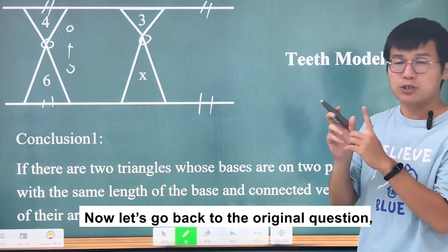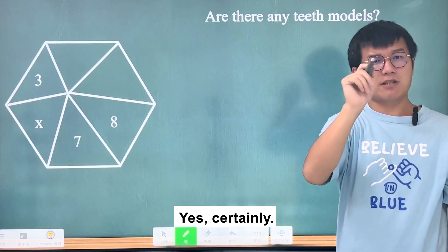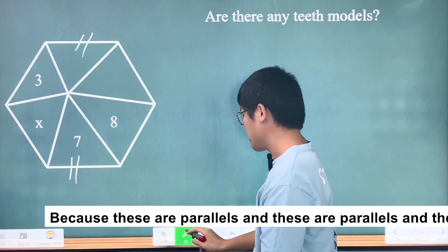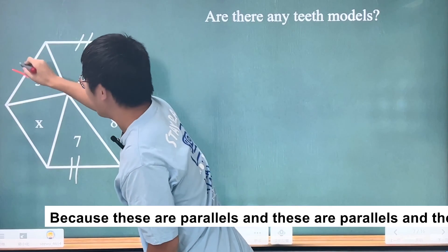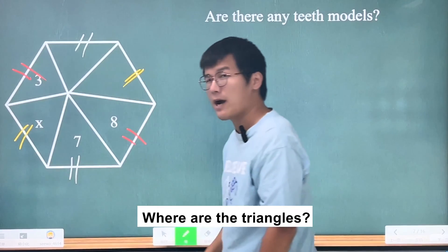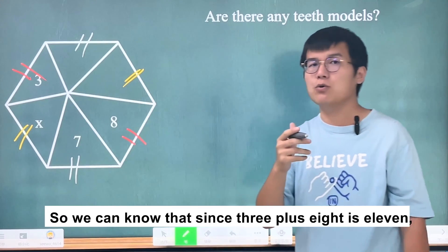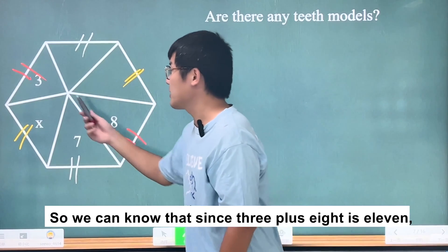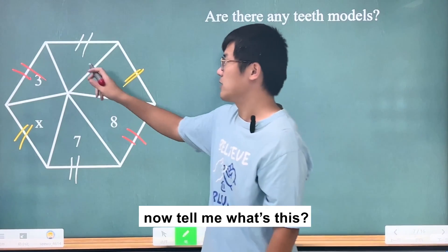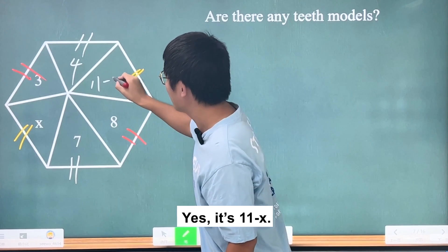Now let's go back to the original question. Are there any tease models? Yes, certainly! In a regular hexagon, these sides are parallel, these sides are parallel, and these sides are parallel. The triangle pairs are: these two, these two, and these two. So we can know that since 3 plus 8 equals 11, the opposite triangle area is also 11. So this one is 4, and this one is 11 minus x.